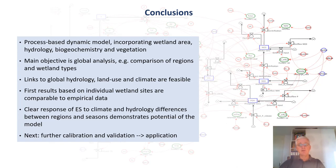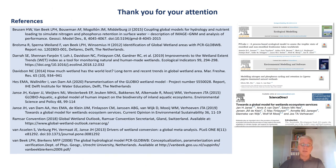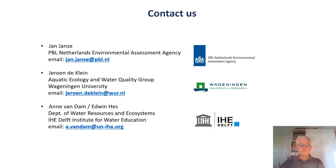To summarize and conclude, we have created a process-based dynamic model that incorporates wetland area, hydrology, biogeochemistry and vegetation to predict the main regulating ecosystem services of wetlands. The main objective of this model is a global scale analysis, such as the comparison of regions or wetland types on the basis of global hydrology, land use and climate. The first results show that it is possible to obtain realistic model results compared to observed data. These realistic results then lead to clear differences in ecosystem services outcomes for wetlands of different types in different regions, which demonstrates the potential of the model. We will now proceed with further testing, calibration and validation of the model, and we welcome discussion on its potential applications. With that, I conclude this presentation and thank you for your attention. Don't hesitate to contact us if you would like more information.